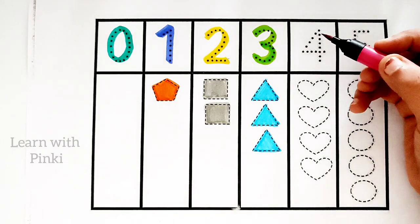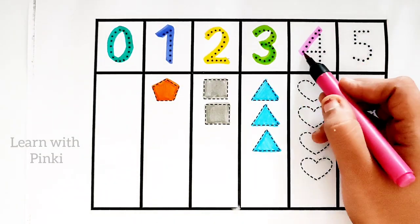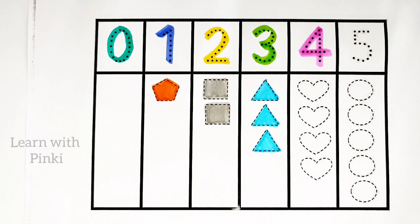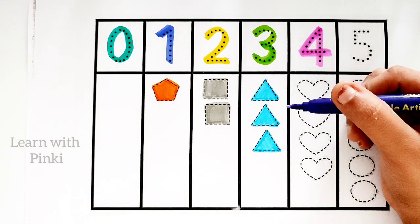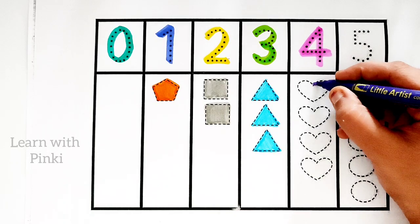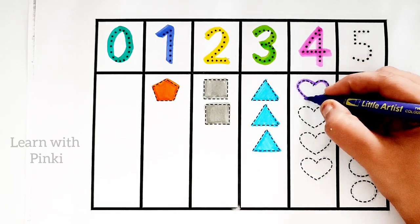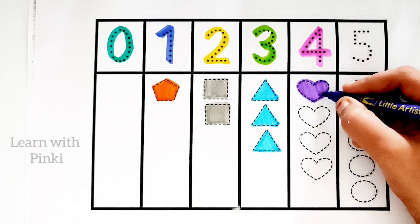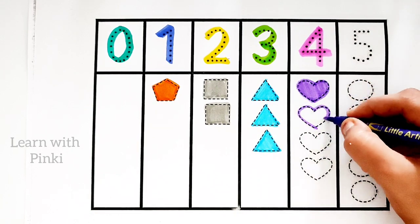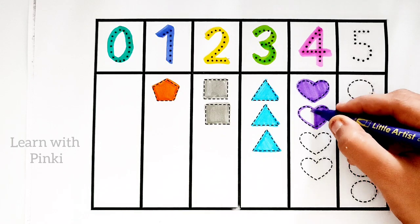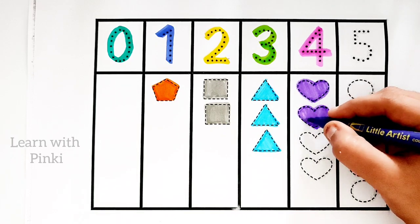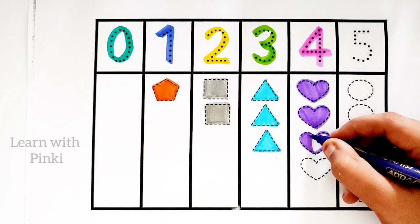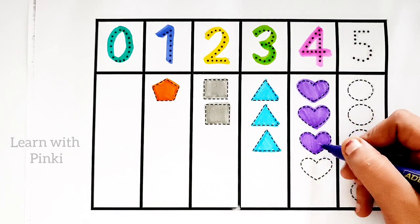Pink color, number 4, number 4. Pink color, number 4. Violet color, 1 heart. Violet color, 1 heart, 2 hearts, 2 hearts. Violet color, 2 hearts, 3 hearts, 3 hearts.